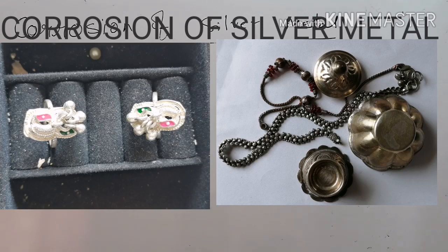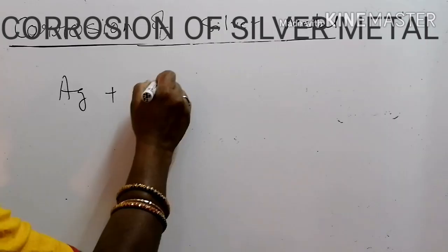That means when silver metal comes in contact with hydrogen sulfide. So, the formula will be Ag plus H2S. It will form AgS here. Sulfur, valency 2, silver 1.